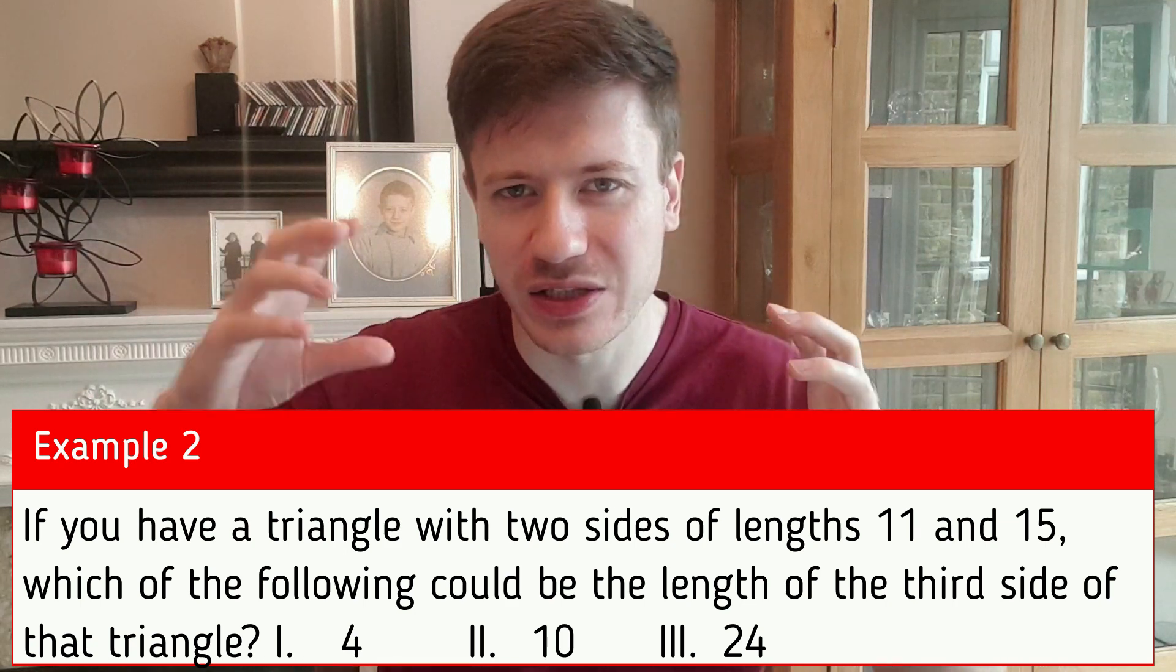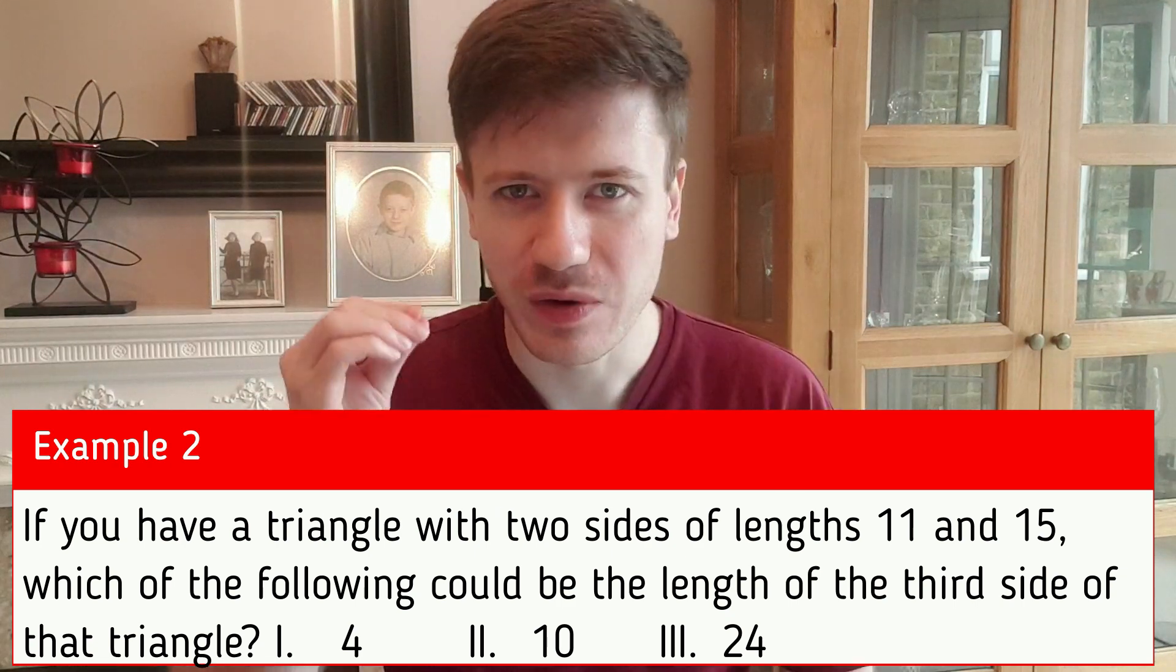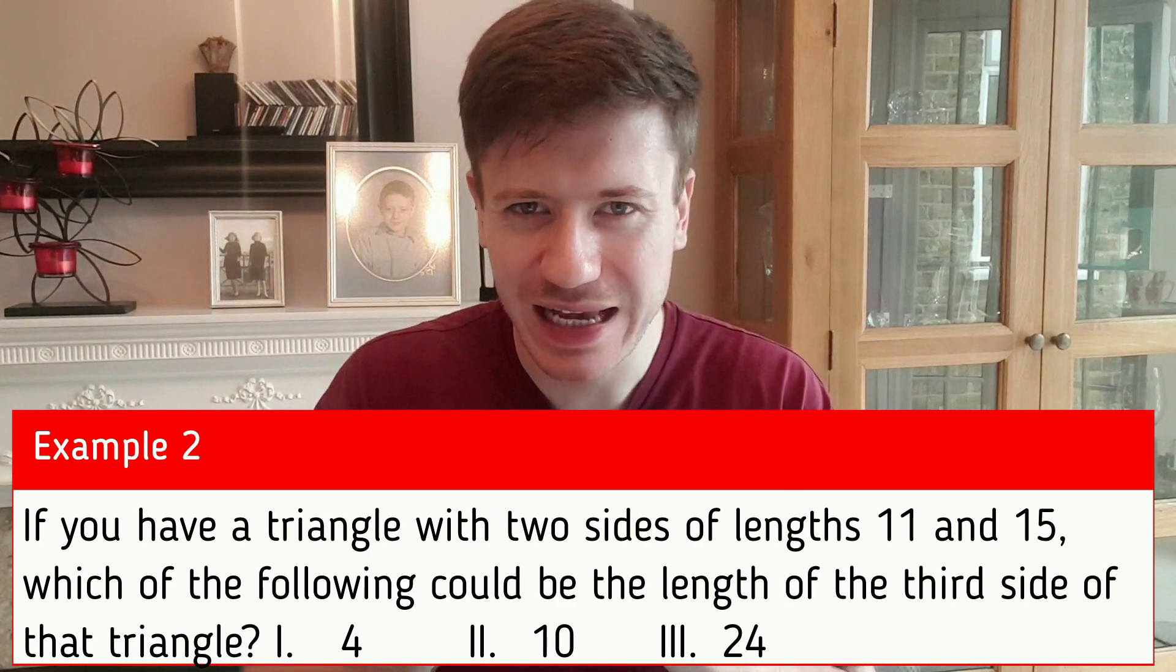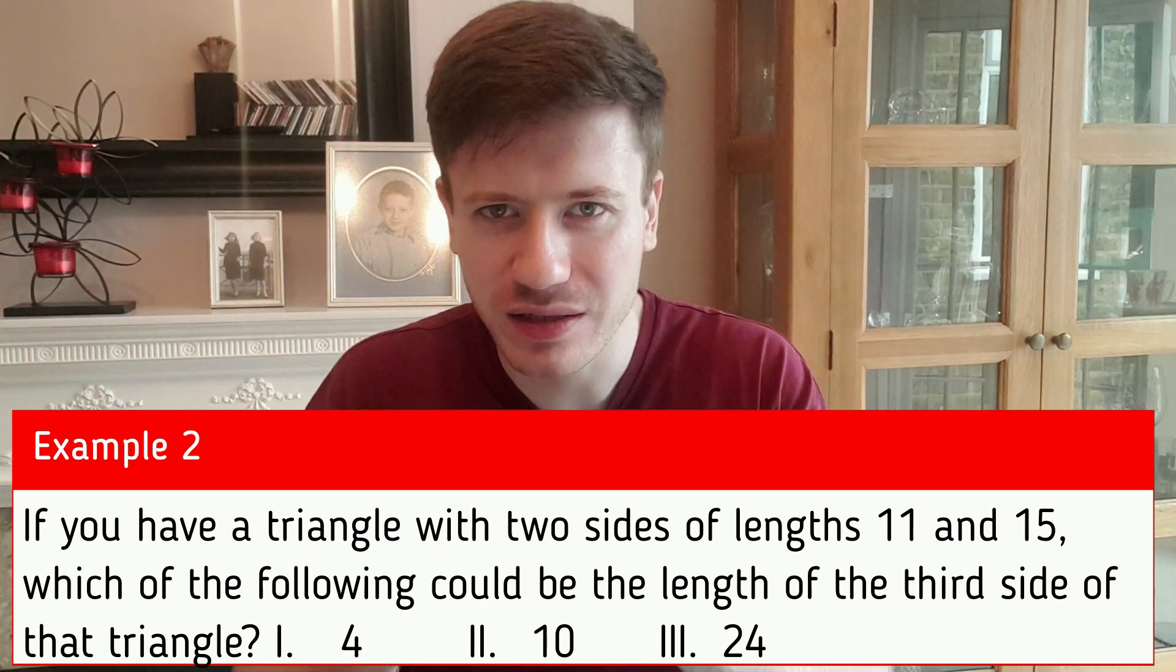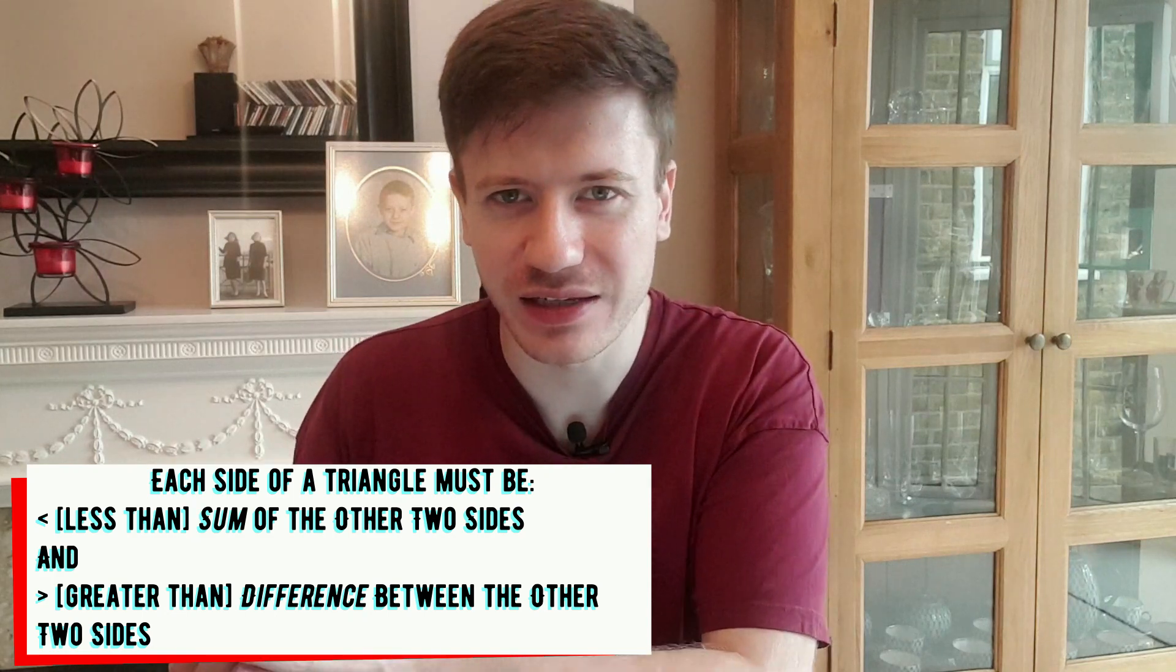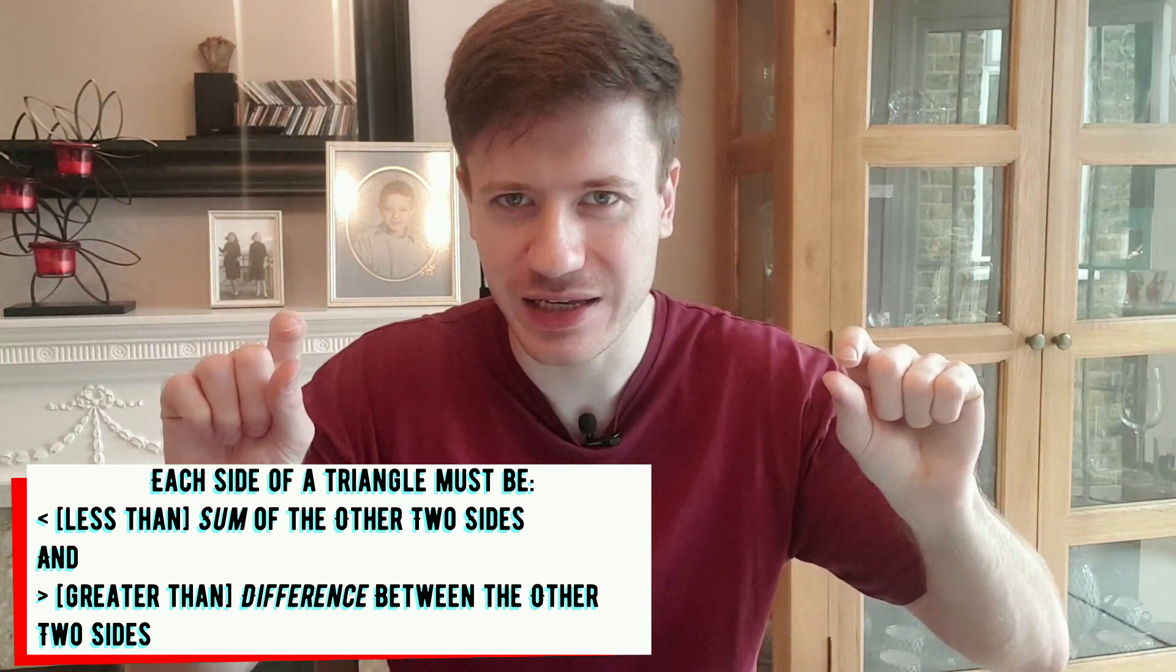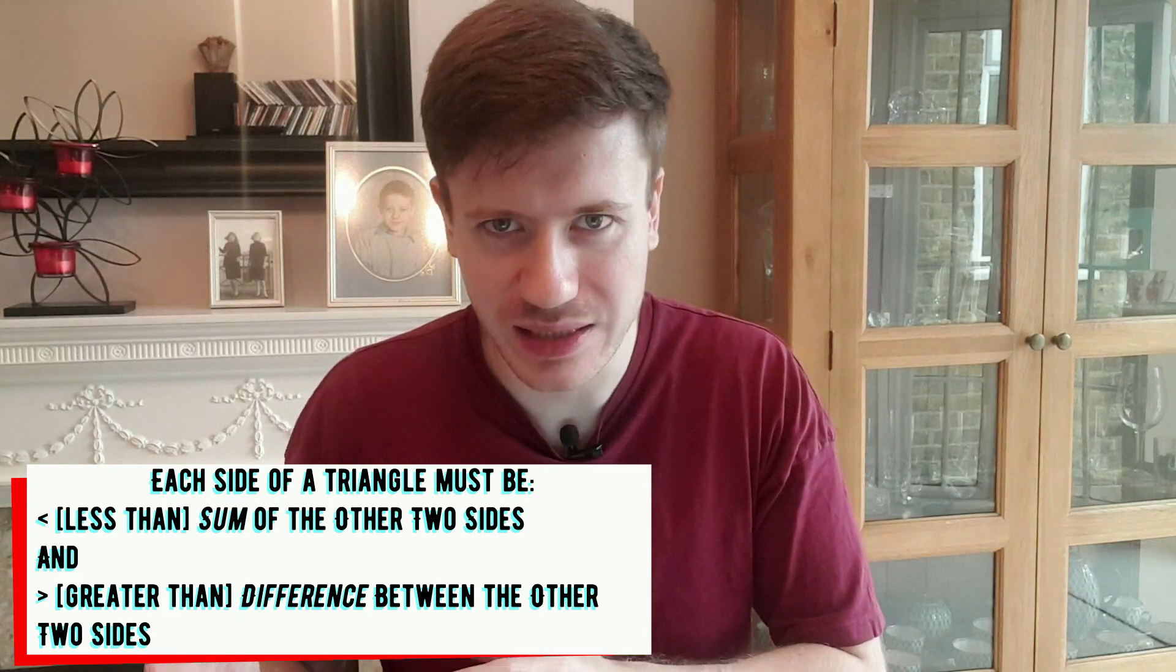Remember, if the third side was exactly 4, then those two shorter sides, 11 and 4, would only just exactly match the third side, which is 15, and so you'd have a flat line instead of a triangle. And that's why the third side can't be 4 and it can't be 26. 10 and 24 are within that range, so they're fine.